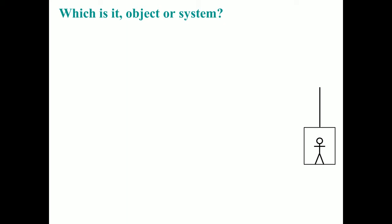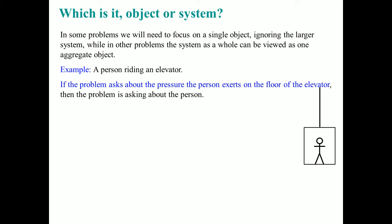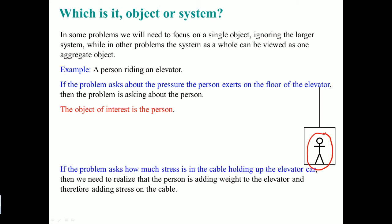What is an object or a system? In some problems, you would need to focus on a single object, ignoring the larger system. While in other problems, the system as a whole can be viewed as one big object. In this example, a person is riding on an elevator. If the problem asks about the pressure the person exerts on the floor, then the object of interest is just that one person. However, if the problem asks how much stress is in the cable, then we need to realize that the person is adding weight to the elevator, therefore adding stress on the cable. So the object becomes the system — both the elevator and the person together.